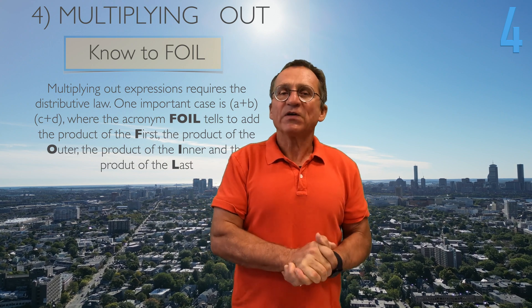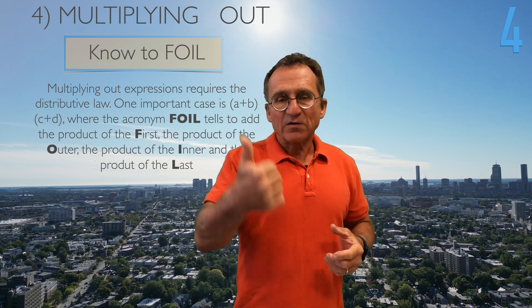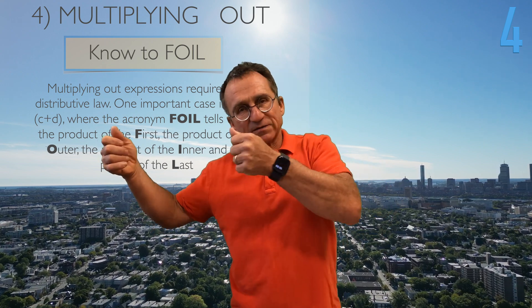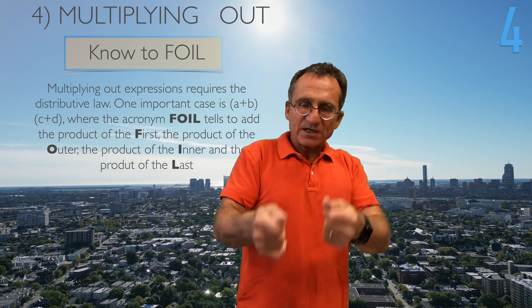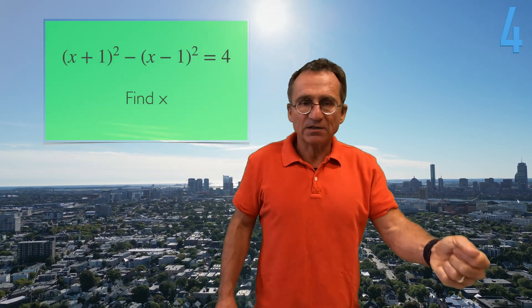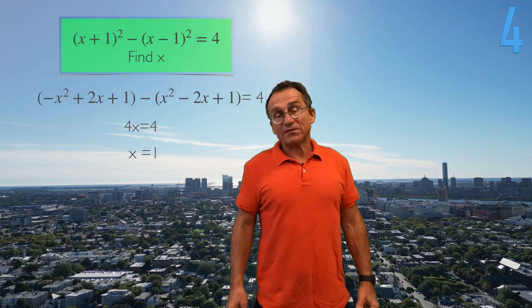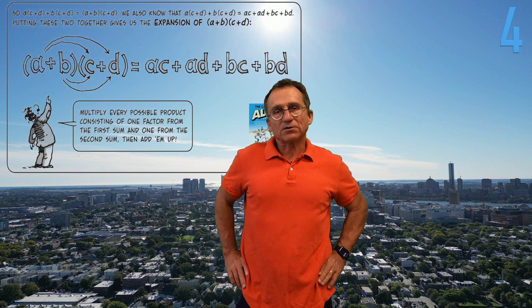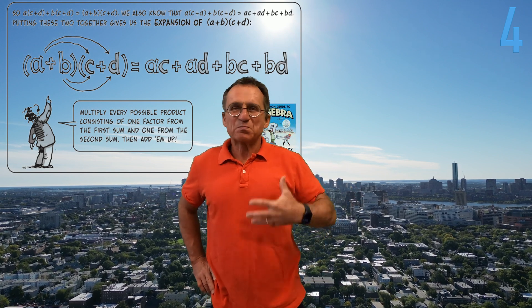Often we have to FOIL things out. FOIL means: first take the product of the first expressions, then the outer, then the inner, then the last. For example, (x+1)² is x² + x + x + 1 — those are the four terms. Here is a cartoon page which explains this perfectly.